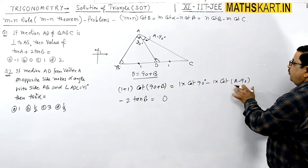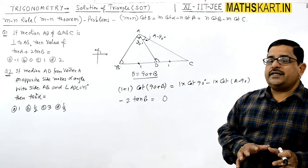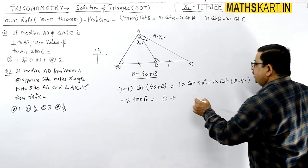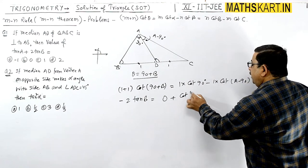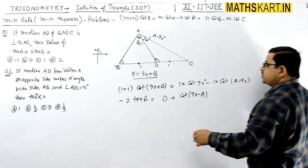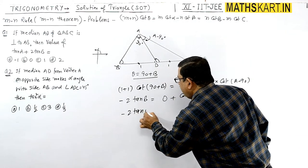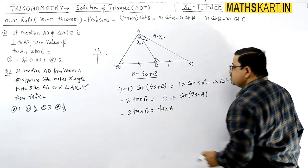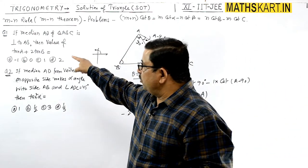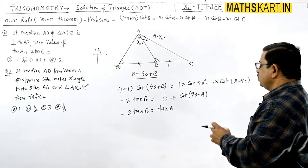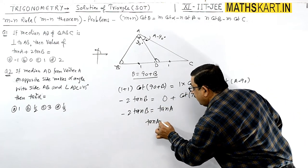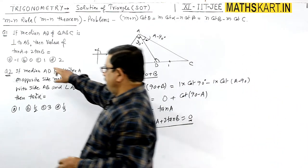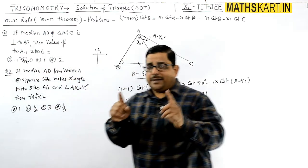So we have −2·tan(B) = cot(90°) − cot(A−90°). Since cot(90°) = 0, and cot(A−90°) = cot(90°−A) = tan(A), this simplifies to −2·tan(B) = −tan(A). Therefore tan(A) + 2·tan(B) = 0. The answer is 0, option B is correct.